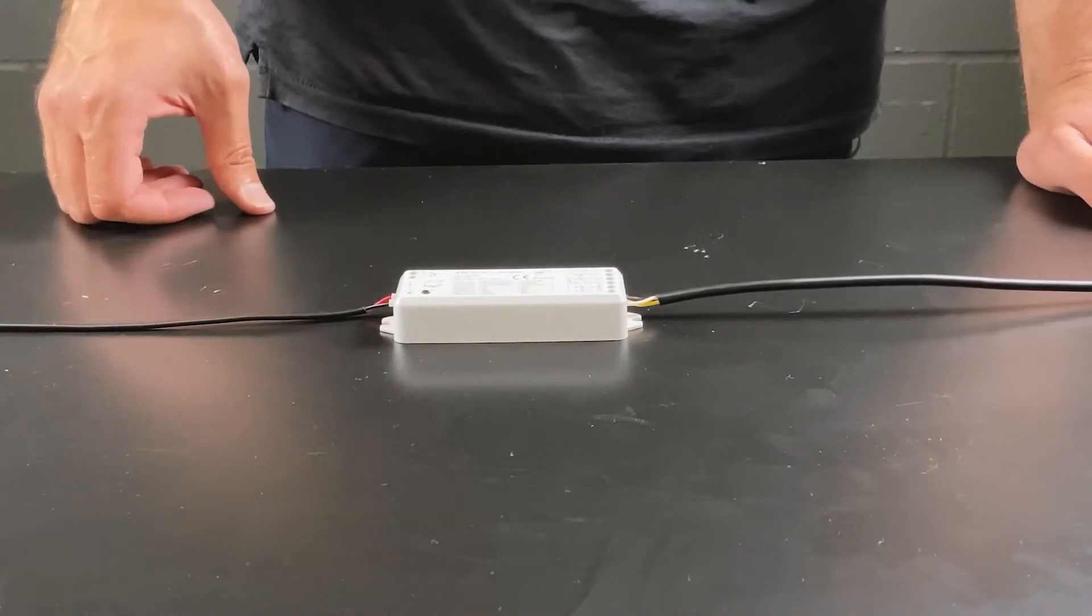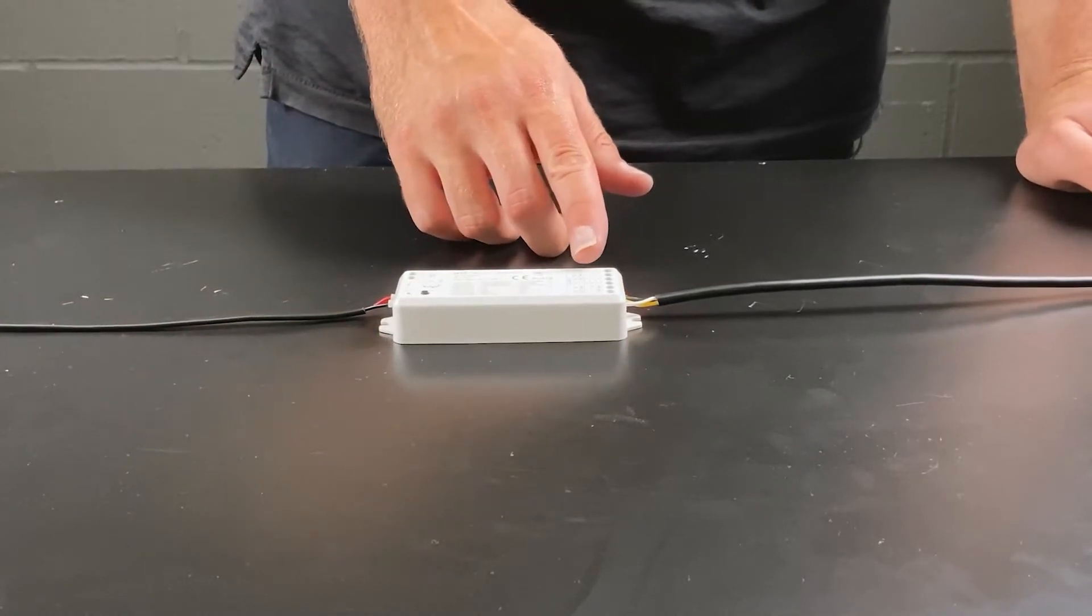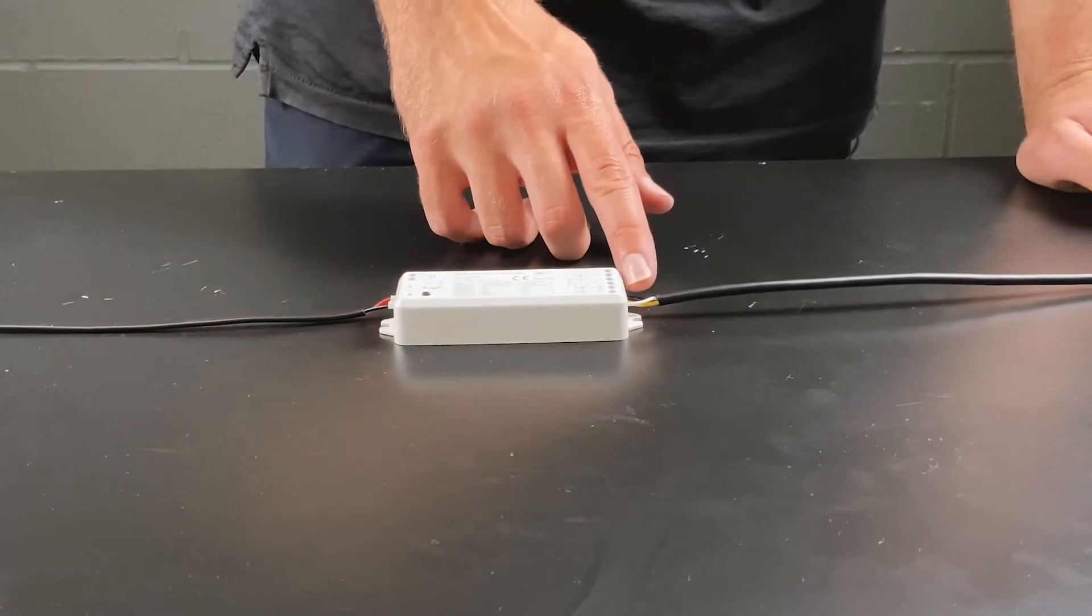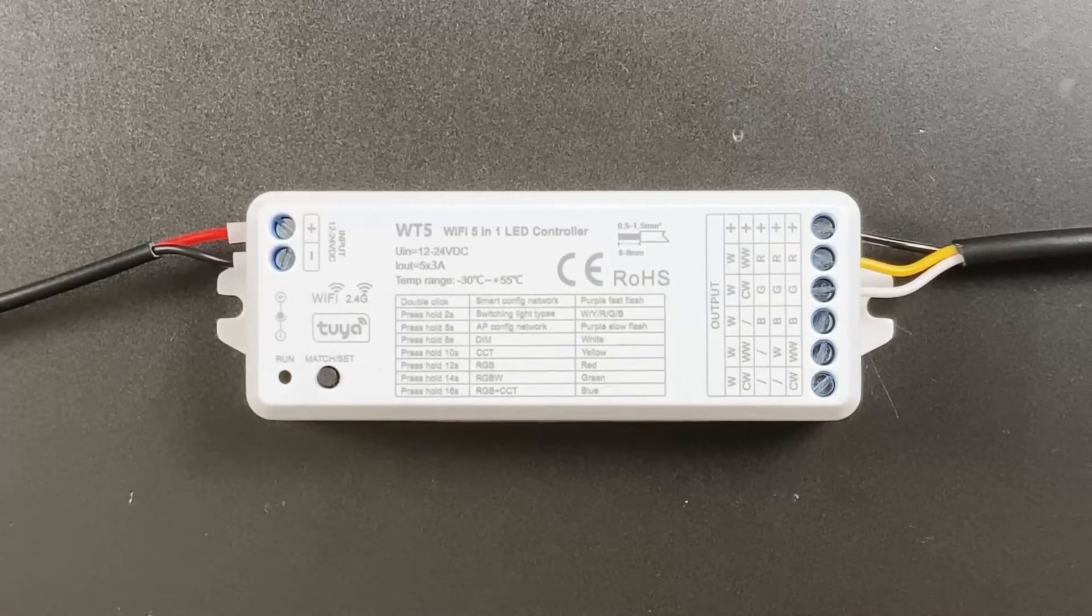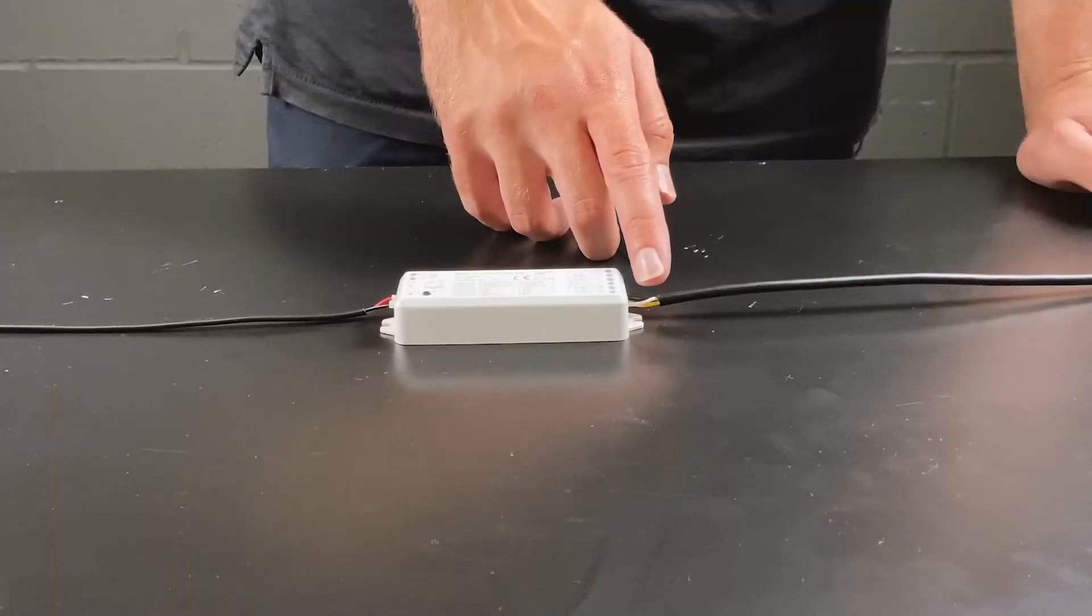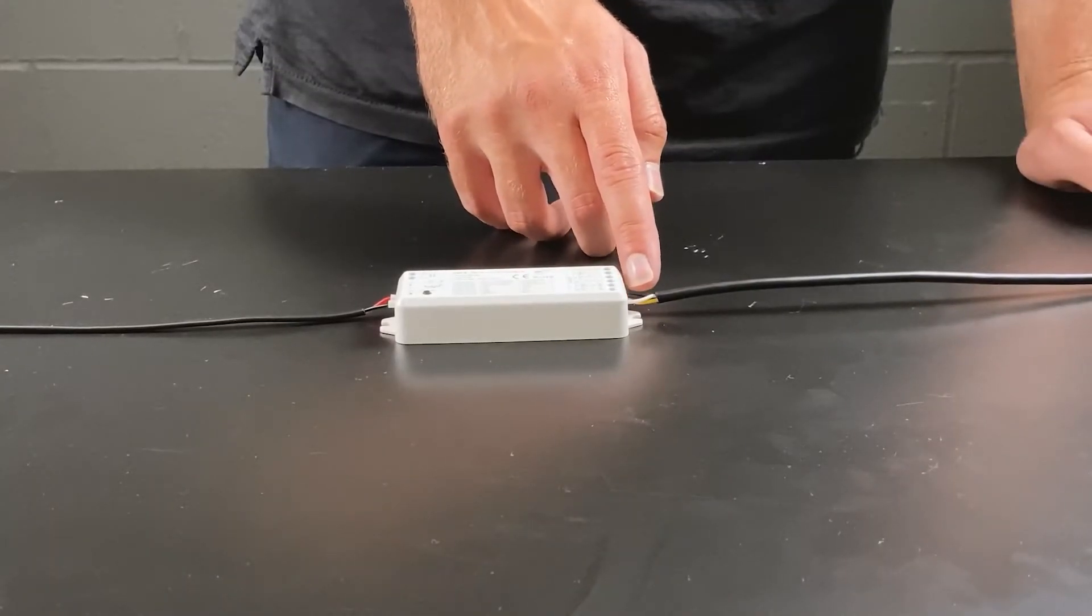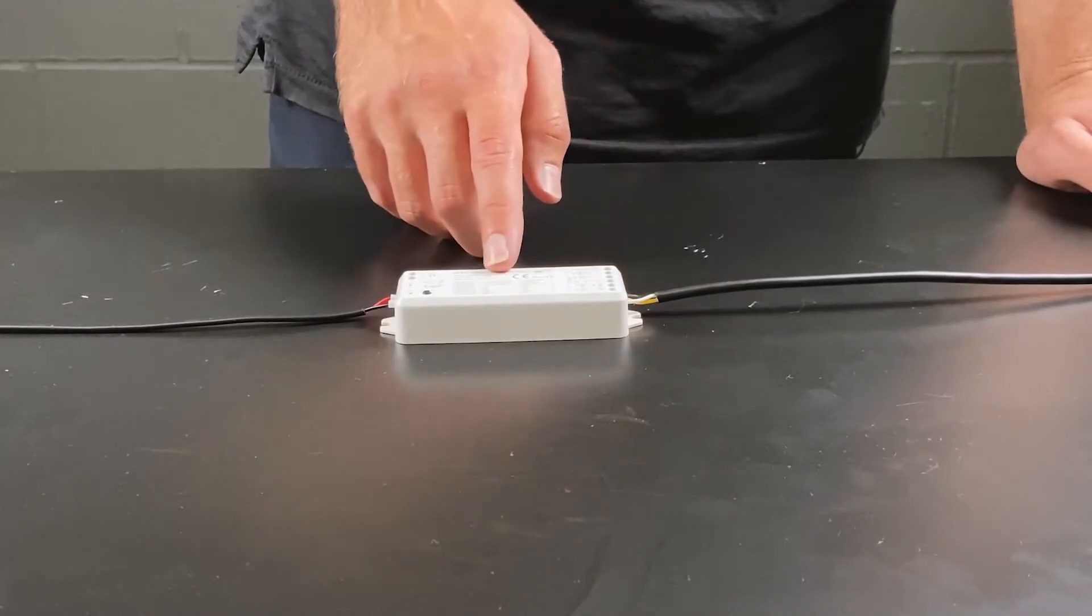For CCT tapes the black wire will go into the positive terminal, the yellow into WW for warm white and the white into CW for cool white. These two negative channels will change the color temperature of the CCT tape.